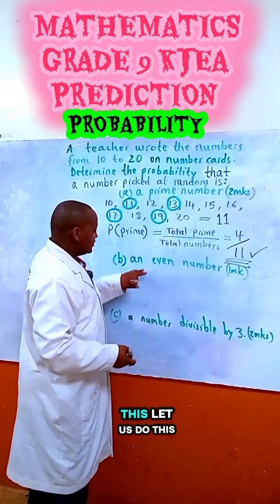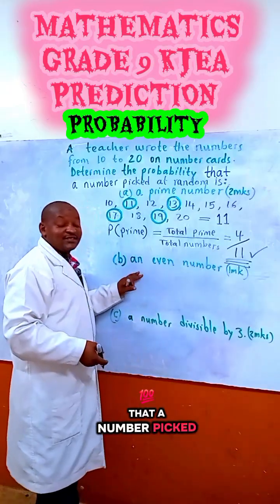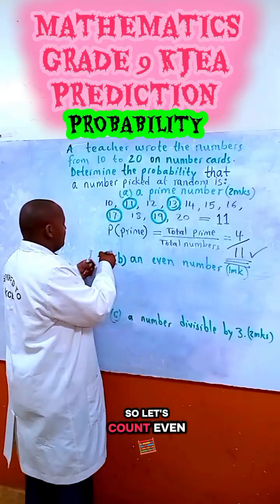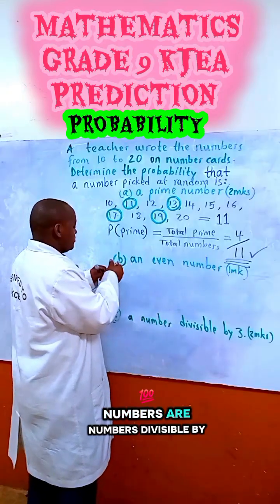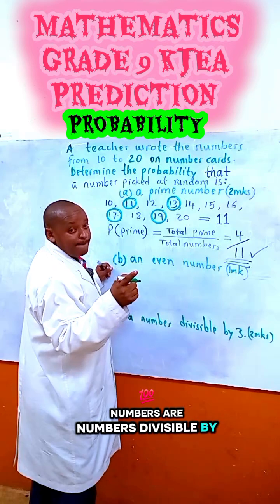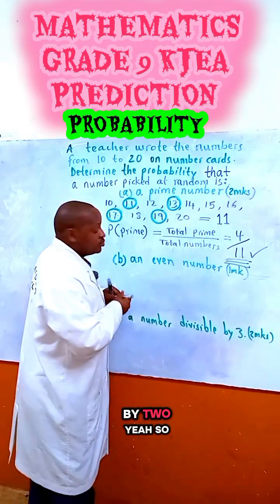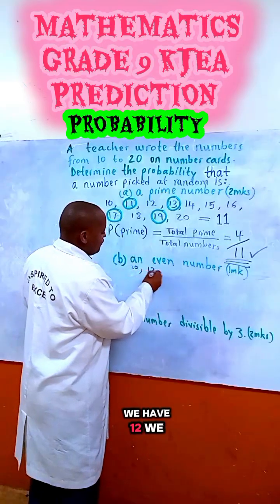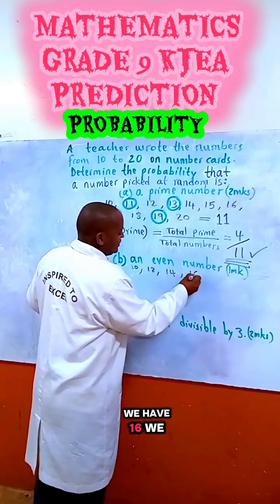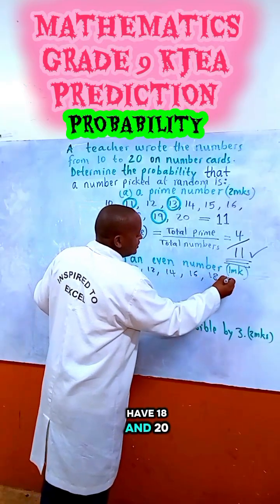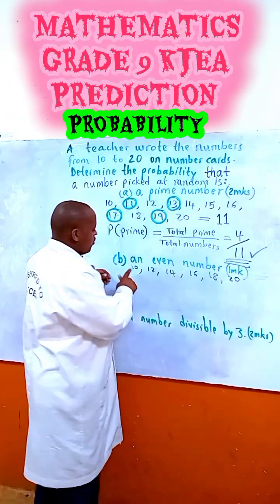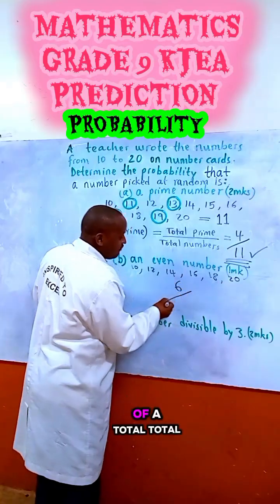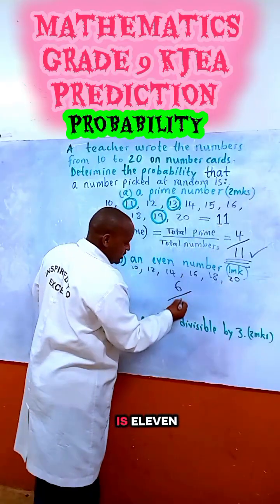Now, let us find the probability that a number picked is an even number. Even numbers are divisible by 2. So here we have 10, 12, 14, 16, 18, and 20. That gives us 6 even numbers. So, the probability is 6 over 11.